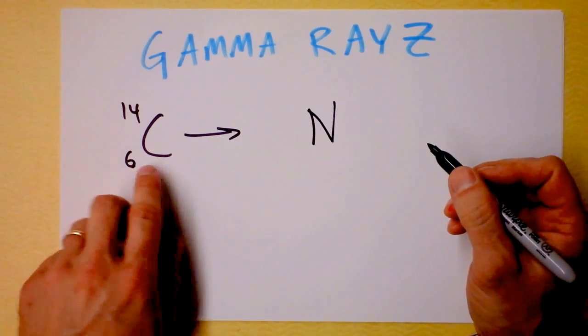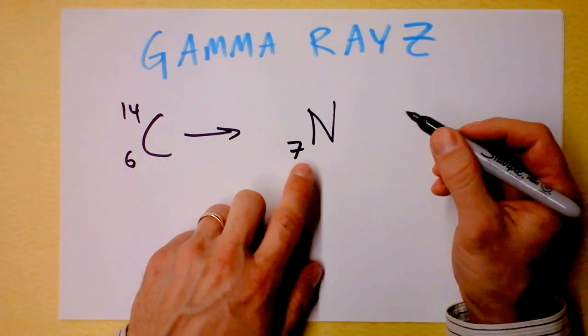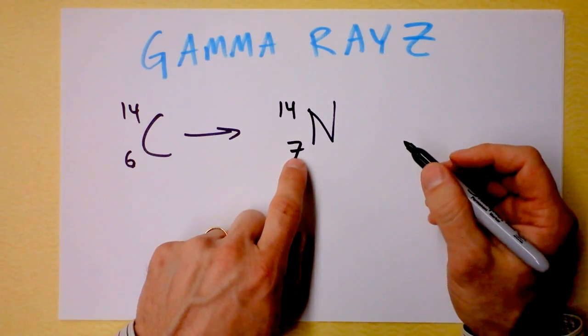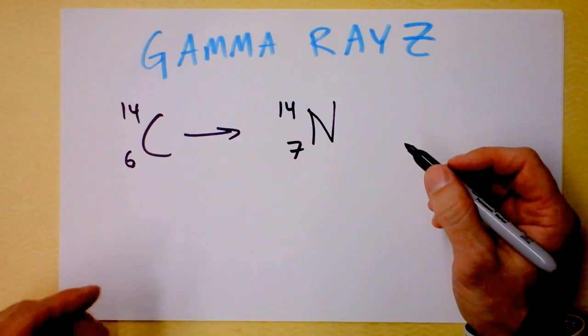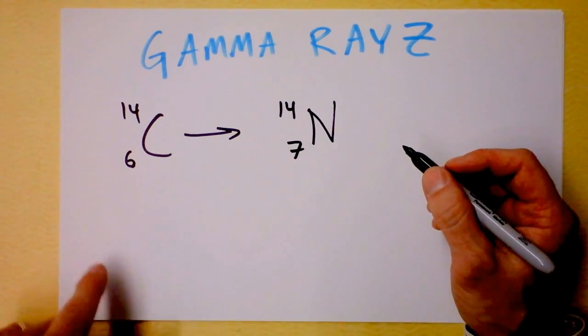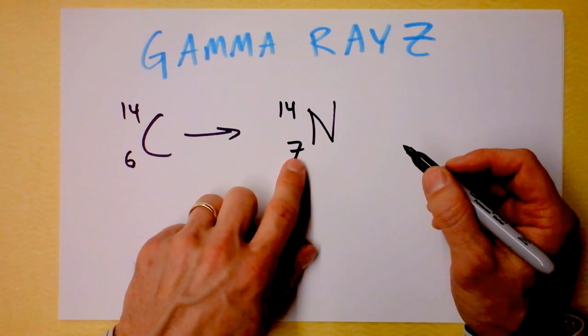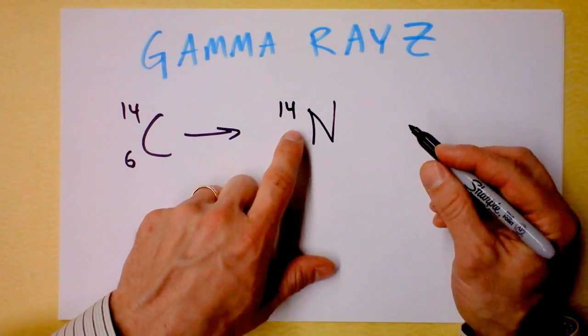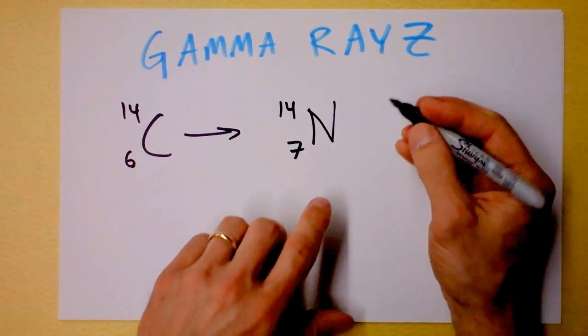It gets one extra proton but one fewer neutron, which still leaves it with 7 and 14. This is following that line on the graph where the number of neutrons and the number of protons was equal. Here if we've got half as many protons as we do total nucleons, then we've got the equal number of neutrons, which is 7.